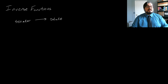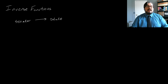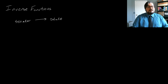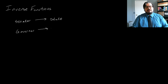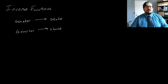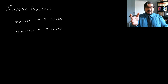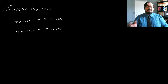But if I tell you a state, well, there's more than one Senator that represents that state. So if I tell you the output to this function, that doesn't determine what the input is. However, if I look at the function which takes a governor to the state that they are the governor of, this does have the property that if I tell you a particular state, you'll be able to tell me the governor, and vice versa.